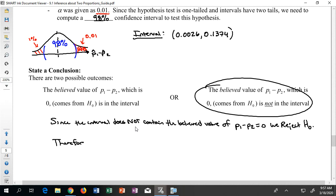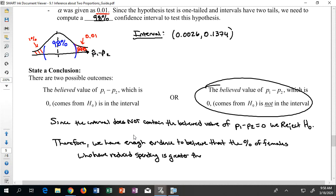I'll word my conclusion as follows: Since the interval does not contain the believed value of P1 minus P2, which we said was 0, we reject H0. It doesn't seem like it's a good fit. Therefore I can state what I do believe. I can say we have enough evidence to believe that the percentage of females who have reduced spending is greater than the percentage of males who have reduced spending. That seems to be exactly in line with what H1 actually said.